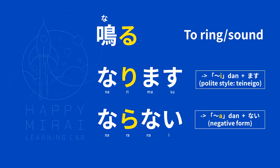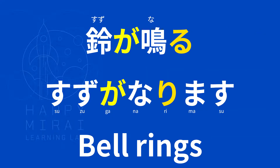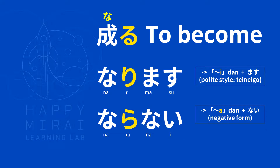Next verb: なる (naru) — to ring, to sound. Please take note of the character here. なります (narimasu). ならない (naranai). There is also another naru — over here it is also naru, however it is a different character.